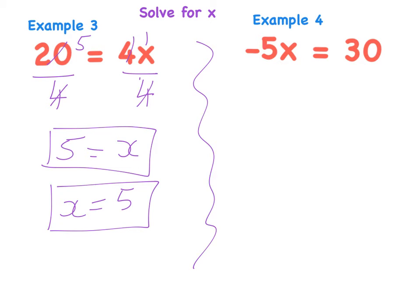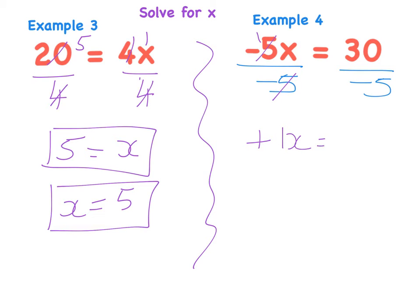The next example is minus 5x equals 30. The issue here is we have a minus 5. This really means minus 5 multiplied by x. To get rid of the minus 5, I divide by minus 5. But what I do to one side I must do to the other. A minus and a minus gives me a plus, and 5 goes into 5 once — so I have 1x equals. On the other side I have a plus and a minus, which gives me a minus, and 5 goes into 30 six times. So x equals minus 6.